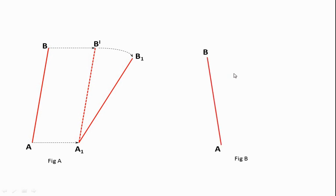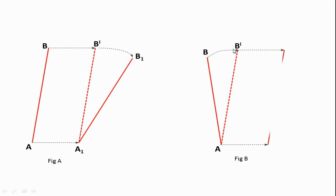Similarly, in figure B, link AB first has point B moving in circular motion about point A to reach position B dash, making AB dash the new position. After some time the link attains position A1 B1. So in figure A, link AB has first a linear translation motion and then circular motion. In figure B, link AB has first circular motion and then linear motion.